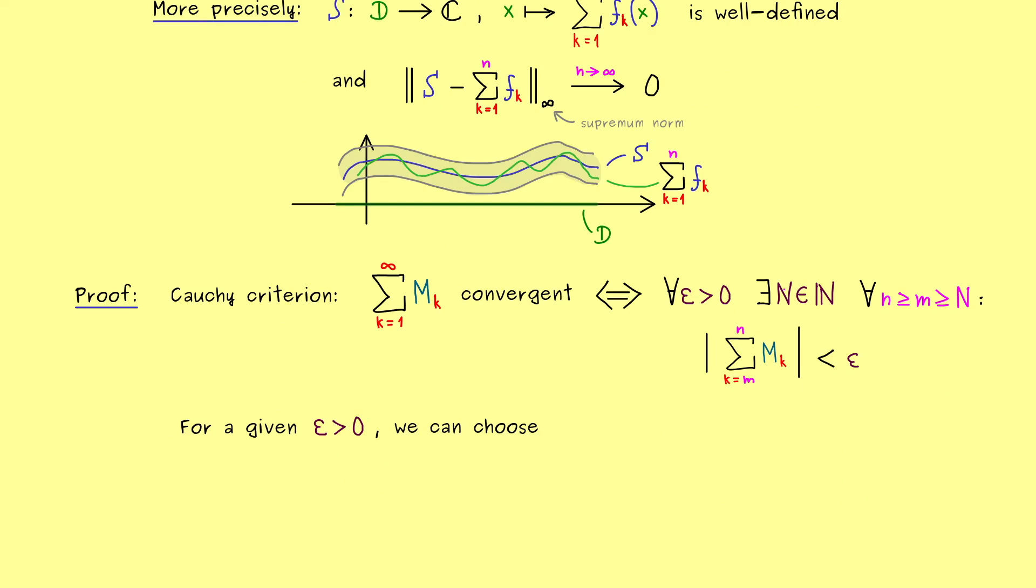Hence, for a given epsilon greater zero, we can choose a capital N as above. And then we immediately get a result for the series of the functions fk. So let's simply look at the partial sums from m to n as well. And then we can just use the standard triangle inequality. It's a finite sum, so we can just pull the absolute value inside. And then in the next step, we can just estimate fk inside. And now the assumption comes in, that we know that each one is less or equal than mk. However, for the series of the non-negative mk's, we already know it's less than epsilon by the Cauchy criterion.